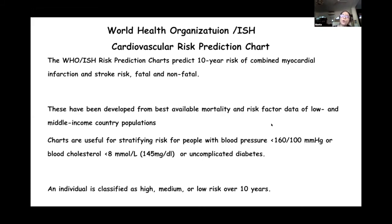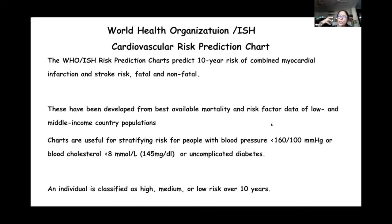These charts are very useful for stratifying risk for people whose blood pressure is less than 160/100. If a woman has blood pressure above 160/100, she automatically falls into a high-risk category for CVD and there is no need for a prediction chart. So prediction charts are specifically designed to pick up normal or healthy women for hypertension and cardiovascular disease risk. If someone already has high blood pressure, cholesterol above 145 mg/dL, or uncomplicated diabetes, she is already high risk — no prediction chart needed.